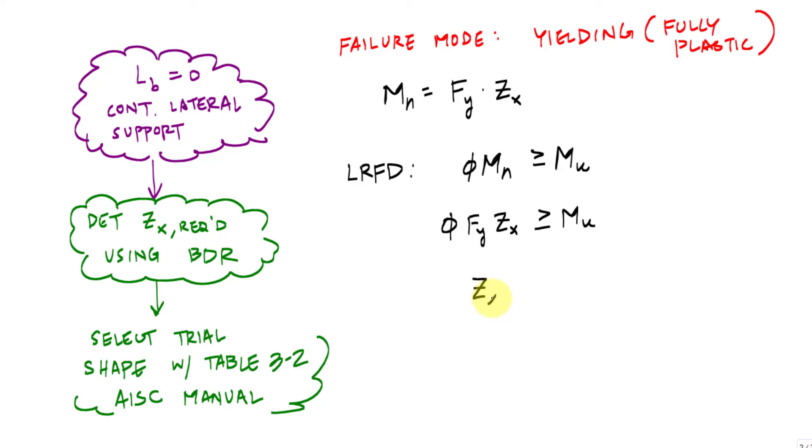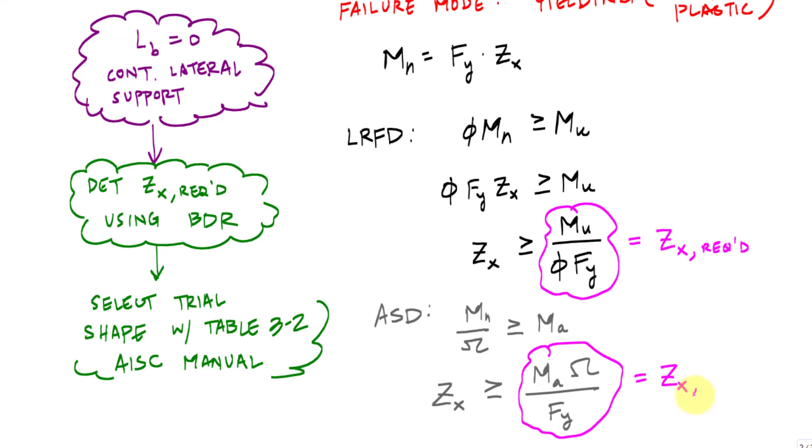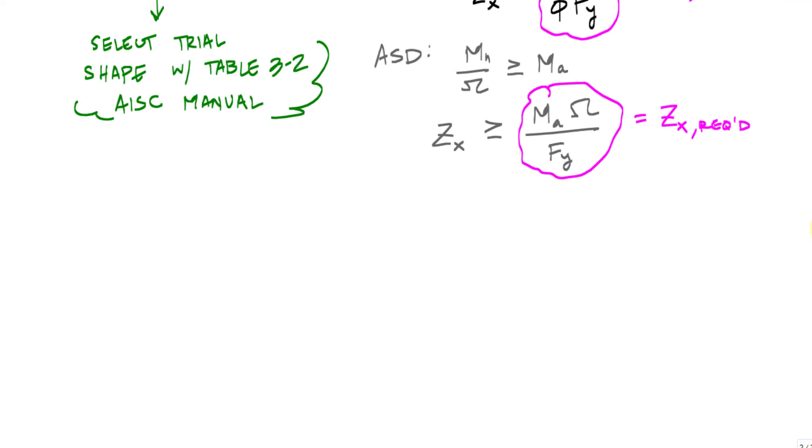I can solve for, I can say whatever Zx I choose, it better be greater than or equal to MU over phi Fy. This number would be a Zx required. I can do the same thing with ASD. Once I have a Zx required, I can use table 3-2. And what the heck is table 3-2?